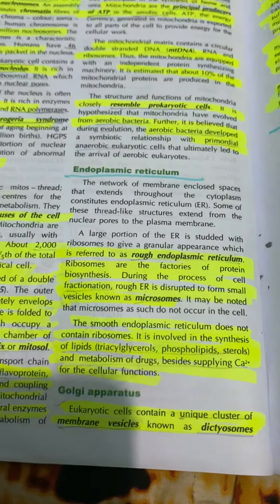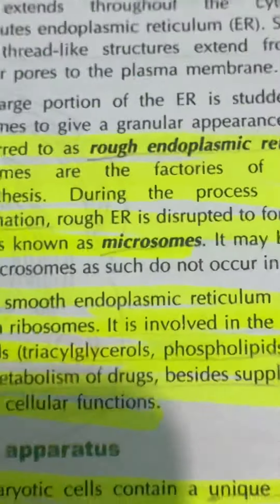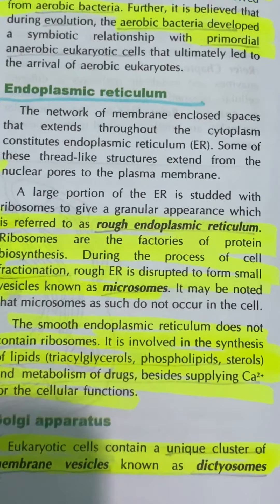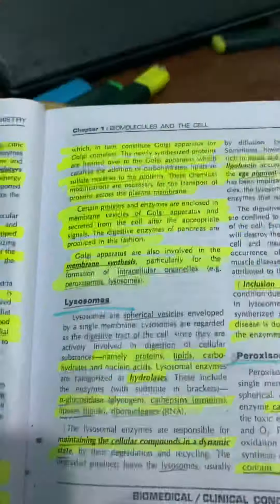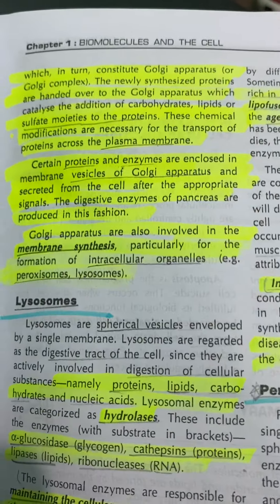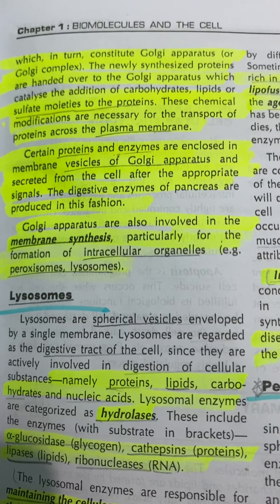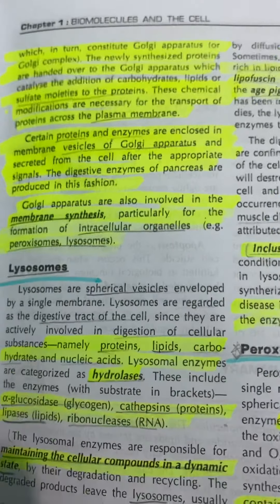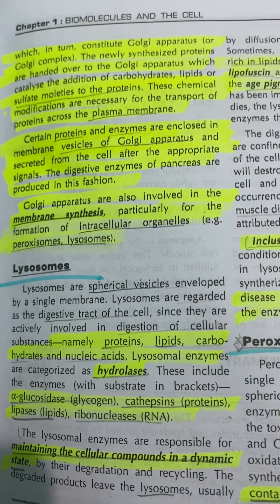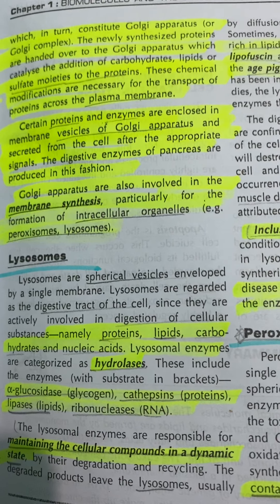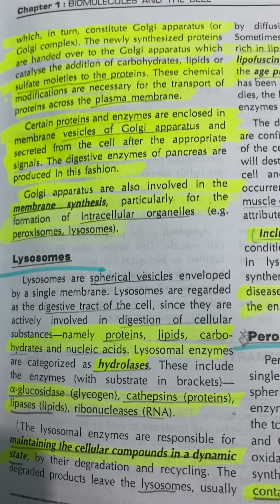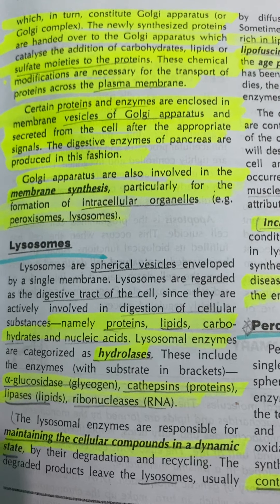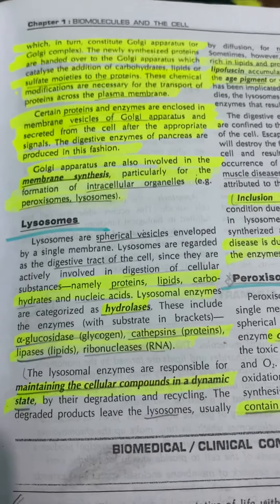Golgi apparatus: eukaryotic cells contain a unique cluster of membrane vesicles known as dictyosomes, which constitute the Golgi apparatus or Golgi complex. The newly synthesized proteins are handed over to the Golgi apparatus, which catalyzes the addition of carbohydrates, lipids, or sulfate moieties to the protein. These chemical modifications are necessary for the transport of proteins across the plasma membrane. Certain proteins and enzymes are enclosed in membrane vesicles.